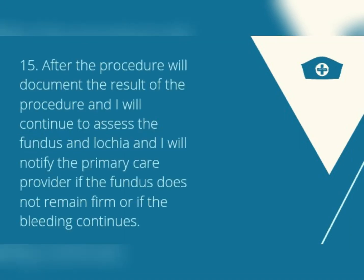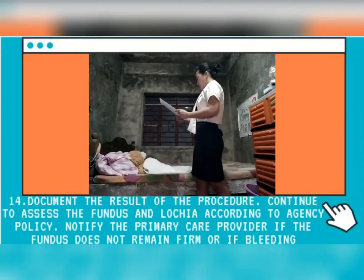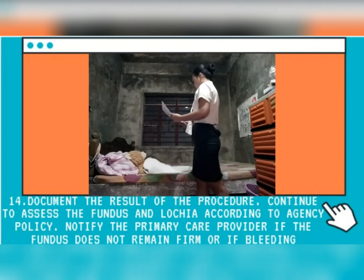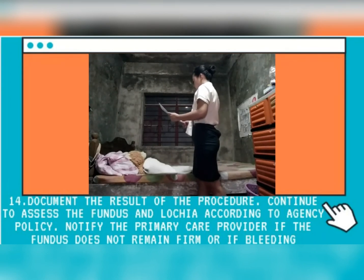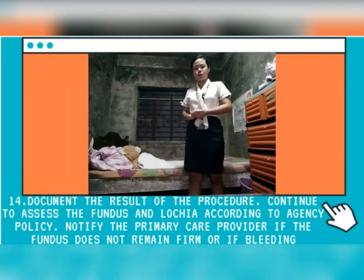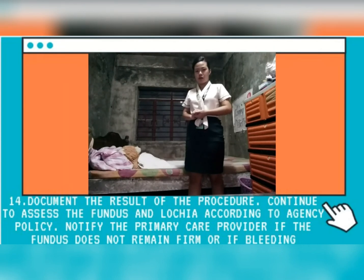Documentation. Document the result of the procedure. Notify to assess the fundus and lochia according to agency policy. Notify the primary care provider if the fundus does not remain firm or if bleeding continues. Providing means for evaluation through continued assessment allows for early identification and prompt intervention with additional measures such as oxytocin to prevent hemorrhage.